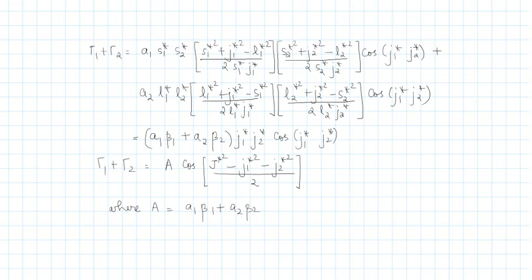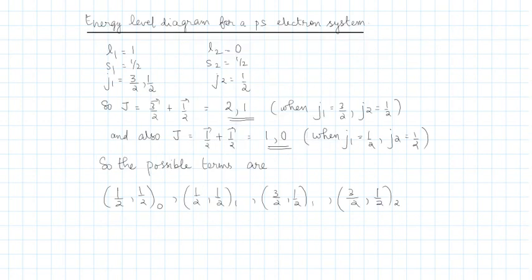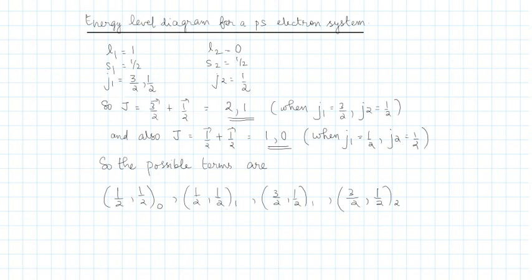Now that we have relations for all gamma factors, let's consider a specific example: a ps electron system. For the p electron, l1=1, s1=1/2, and j1 can take two values: 3/2 and 1/2. For the s electron, l2=0, s2=1/2, and j2 can only be 1/2. For the resultant J, 3/2 can couple with 1/2 to give J=2 and J=1, and 1/2 can couple with 1/2 to give J=1 and J=0. The four possible terms are: (1/2,1/2) with J=0, (1/2,1/2) with J=1, (3/2,1/2) with J=1, and (3/2,1/2) with J=2.